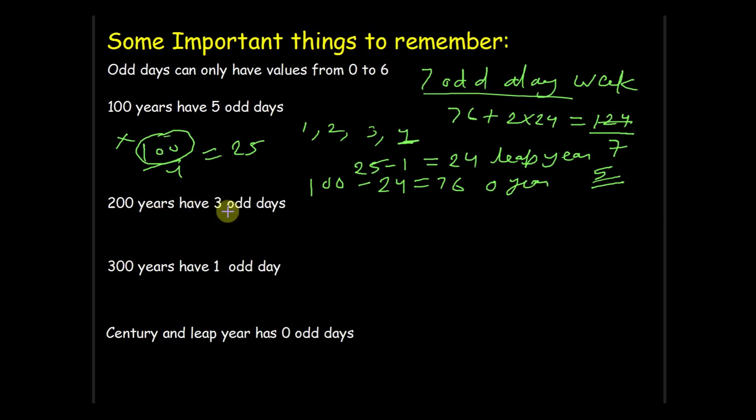Next concept is 200 years have three odd days. We can calculate it easily. We have seen 100 days has 5 odd days, so 200 days will have 5 multiply by 2 equal to 10 odd days. And after dividing by 7, we get 3 odd days.